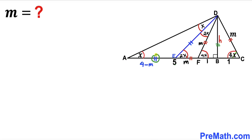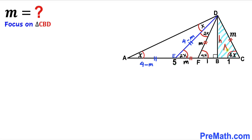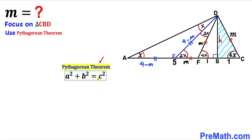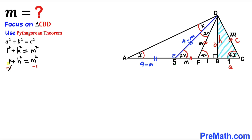So therefore side length AE has got to be 4 minus M. We know that this side length is congruent to this side length, so if this side length is 4 minus M, then this side length is 4 minus M as well. Now let's focus on right triangle CBD and apply the Pythagorean theorem: A² + B² = C². With A=1, B=h, and C=M, we get 1 + h² = M², so h² = M² − 1. Let's call this equation number 1.